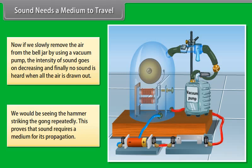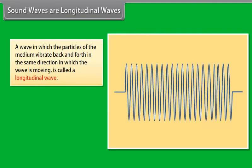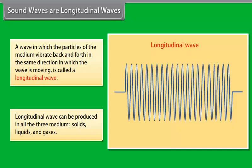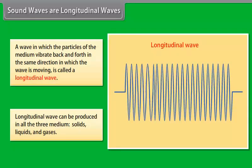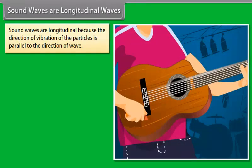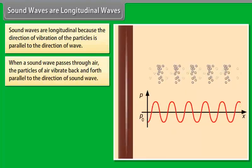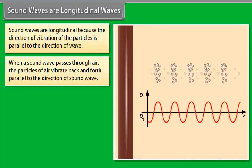This clearly proves that sound requires a medium for its propagation. Sound waves are longitudinal waves. A wave in which the particles of the medium vibrate back and forth in the same direction in which the wave is moving is called a longitudinal wave. Longitudinal wave can be produced in all the three mediums: solids, liquids and gases. Sound waves are longitudinal because the direction of vibration of the particles is parallel to the direction of wave. When a sound wave passes through air, the particles of air vibrate back and forth parallel to the direction of sound wave.